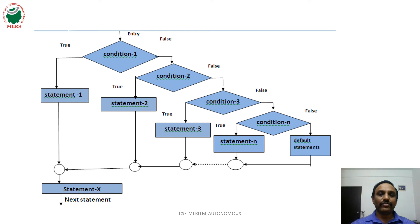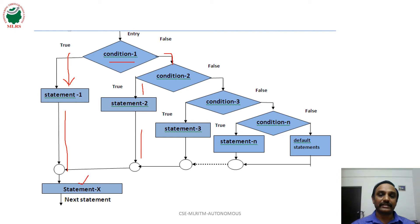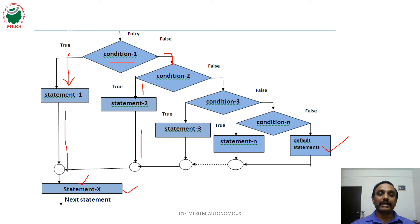The flowchart for the else-if ladder: first condition 1 is verified. If true, the statements in that block are executed, then control goes to statement x. If condition 1 is false, then control goes to condition 2 checking. If that is true, the corresponding statements are executed, then control goes to statement x. If condition 2 is also false, then condition 3 is verified, and so on. If all conditions fail, then the final else block statements are executed, then control goes to statement x.